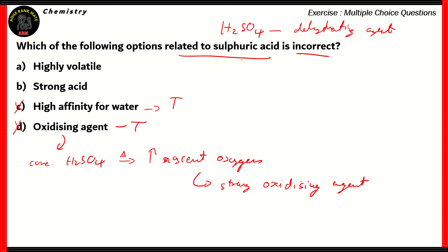Option B — strong acid. This is a fair giveaway. Sulfuric acid is one of the few acids that are strong; others include hydrochloric acid, nitric acid, oxalic acid, etc. Since it releases a lot of H+ ions, option B is also a true statement and not the answer we're looking for. So option A is the incorrect option with respect to sulfuric acid.